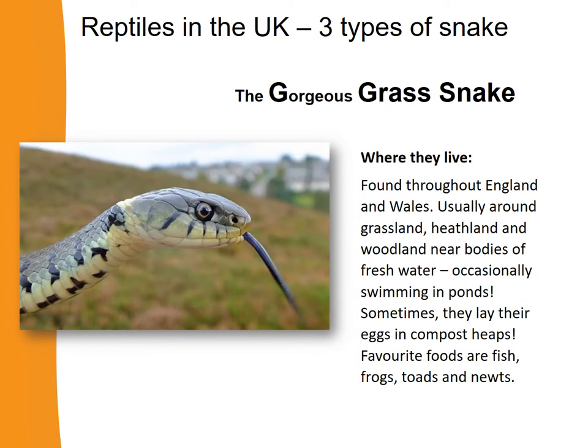And now the grass snake — where do they live? Well, grass snakes are found throughout England and Wales, usually around grassland, heathland or woodland near bodies of fresh water. Occasionally you'll even see them swimming in ponds.